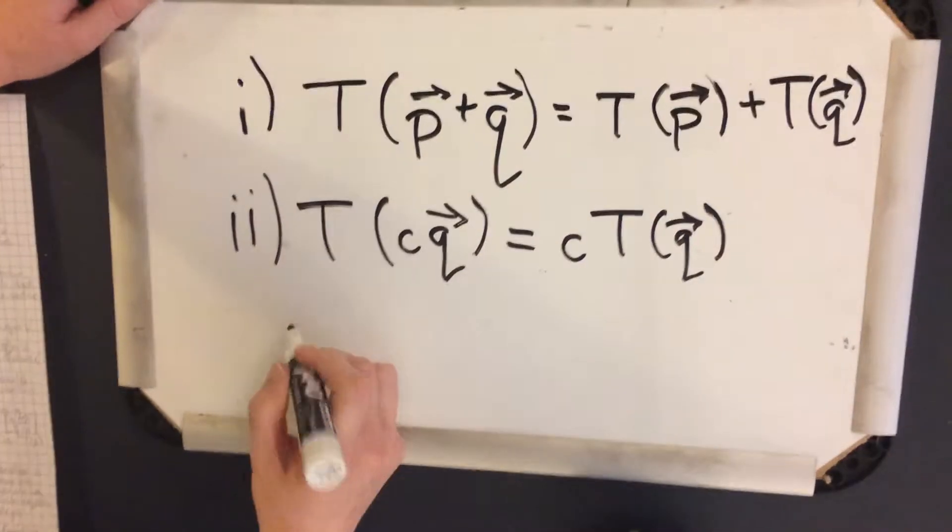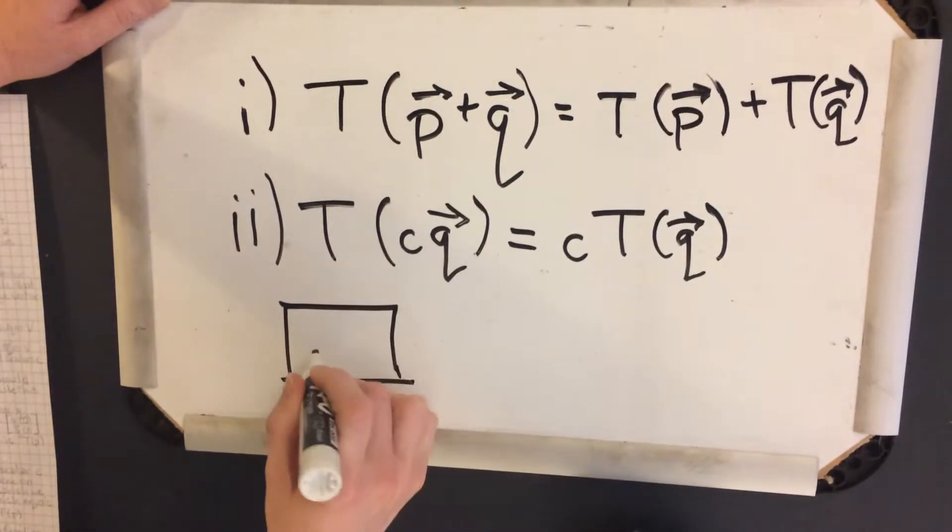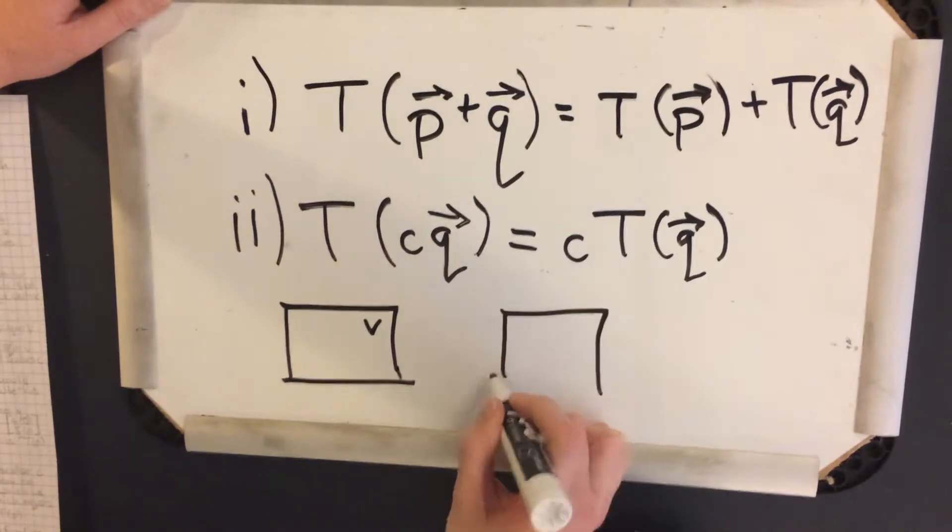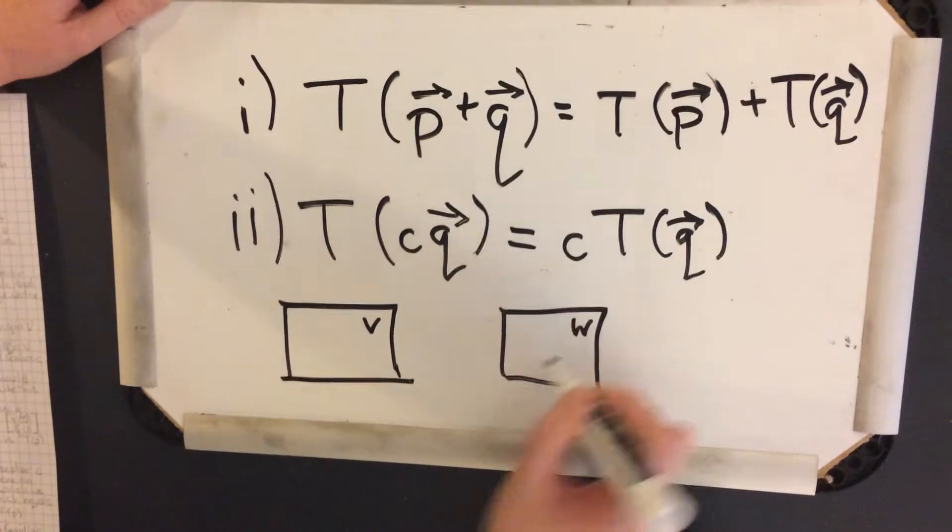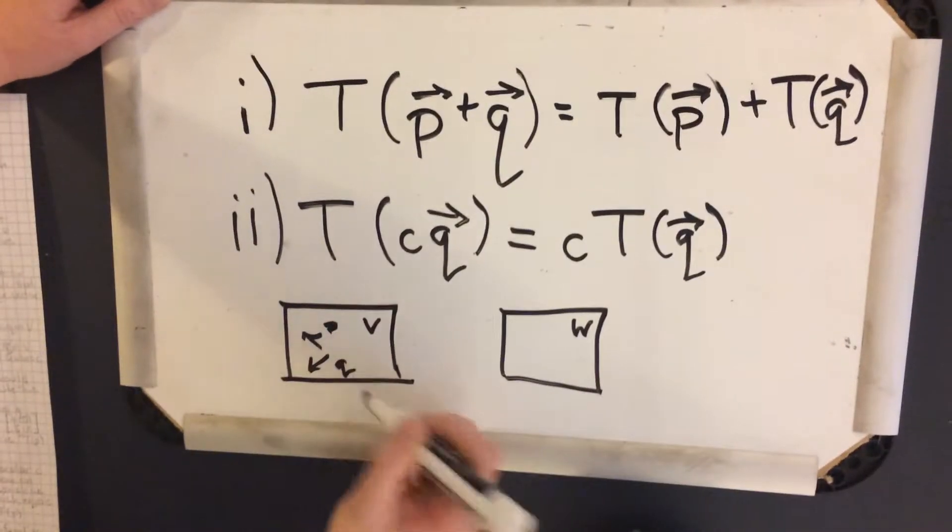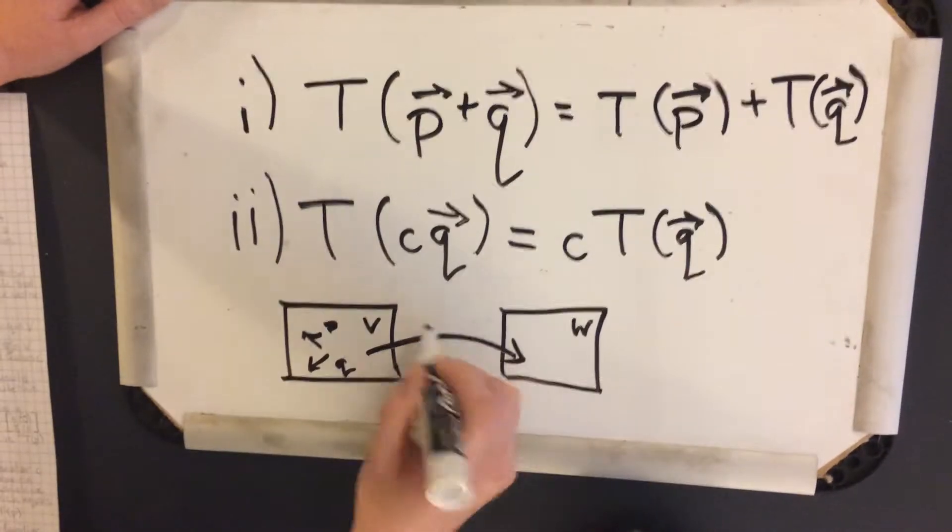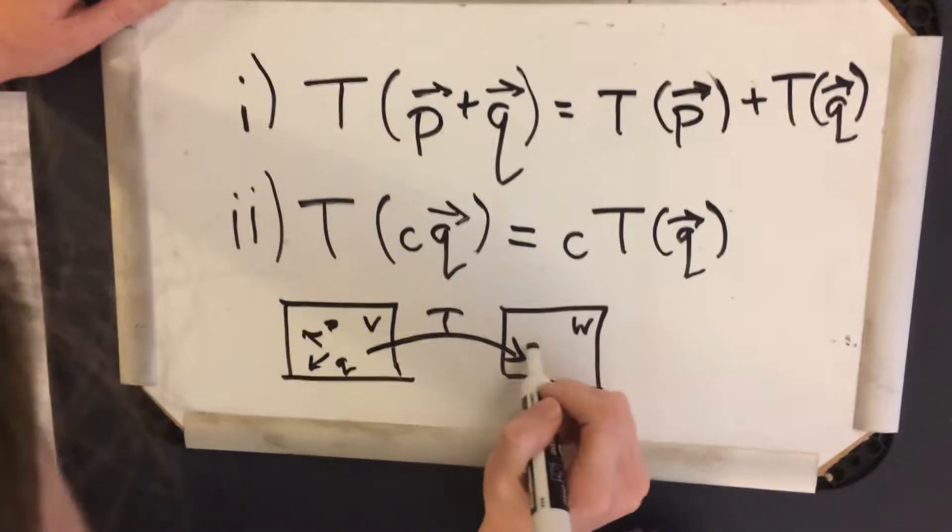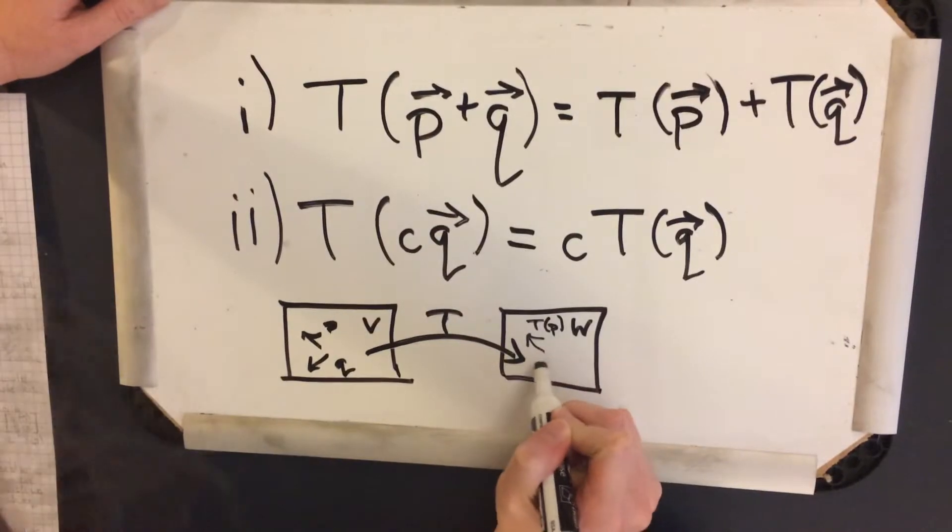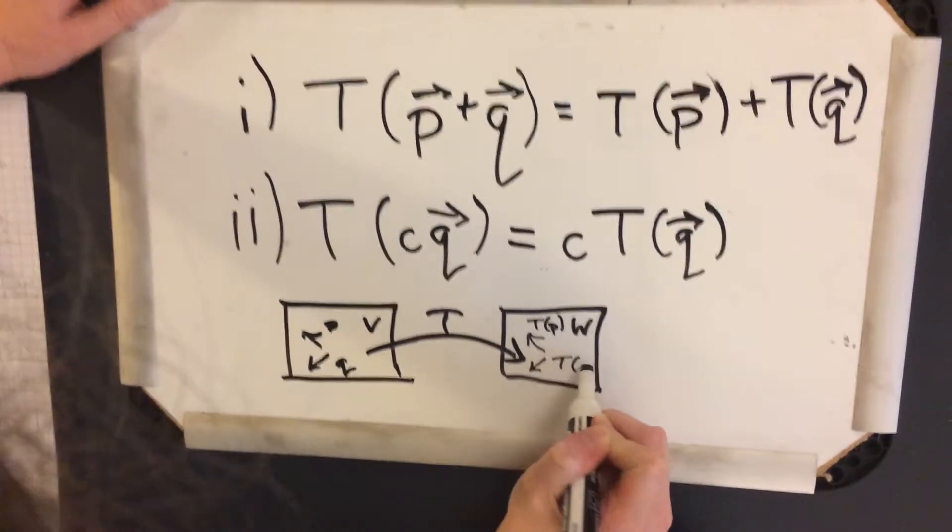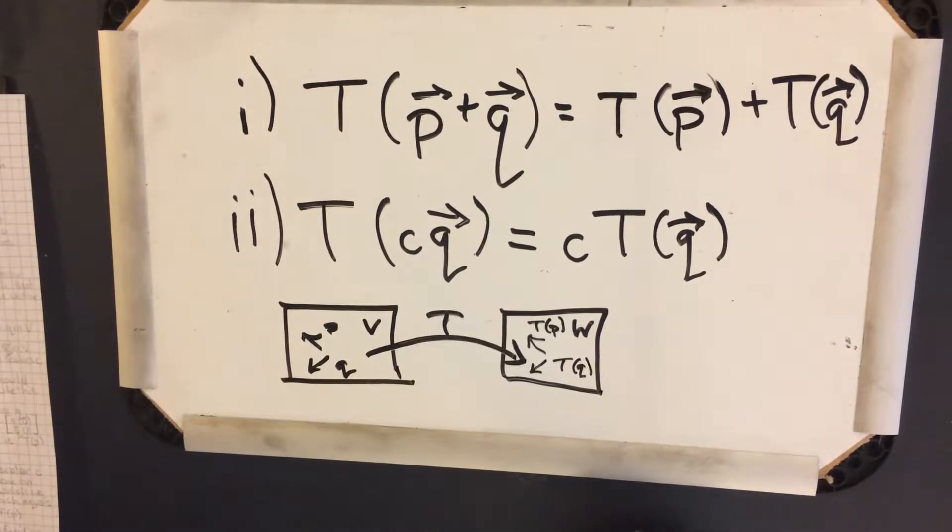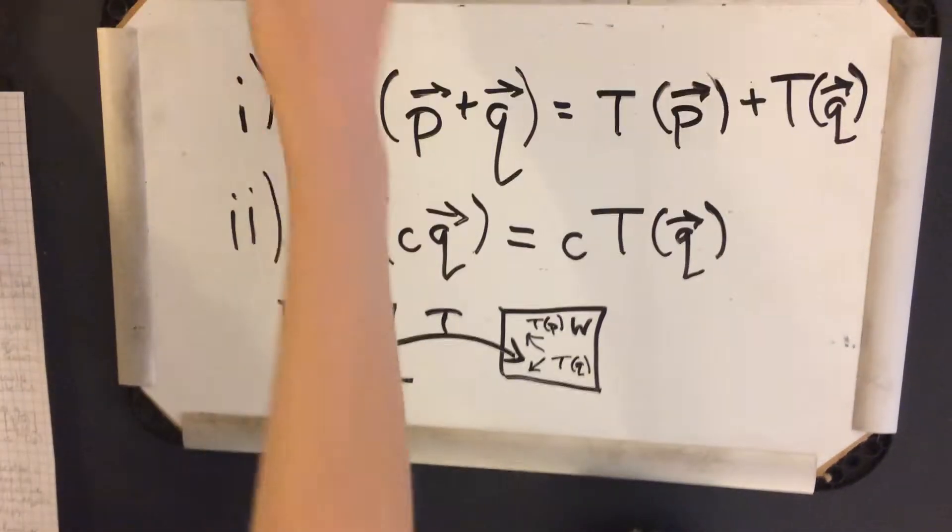So basically, we're going to take this transformation, and if we have a vector like p and q here, we can expect, with T, to have T(p) here. And T(q) here. So let's go ahead and see if we can prove this given the parameters.